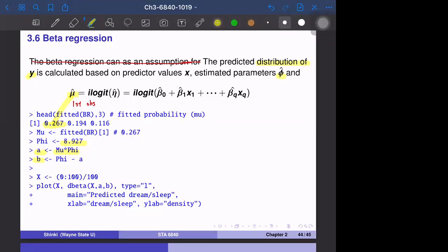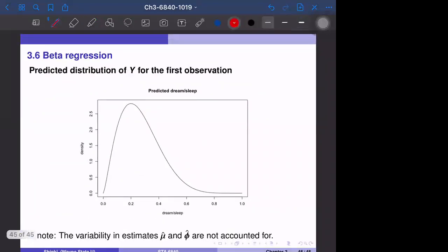We can make the density curve for y. So that becomes this. The center is 0.267, around here. So the expectation of y is 0.267. We have some small probability of, for example, more than 0.6. So we can really exactly see the distribution of y.